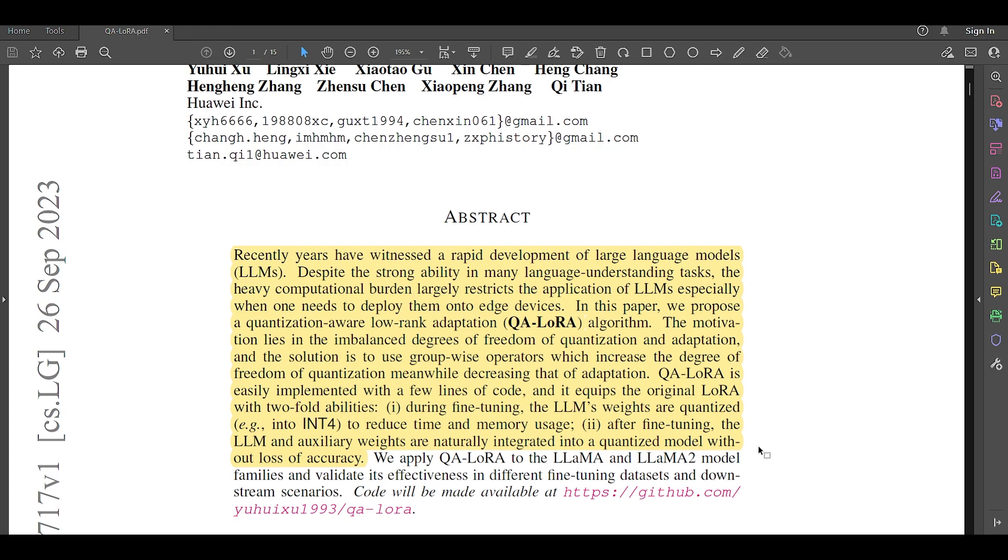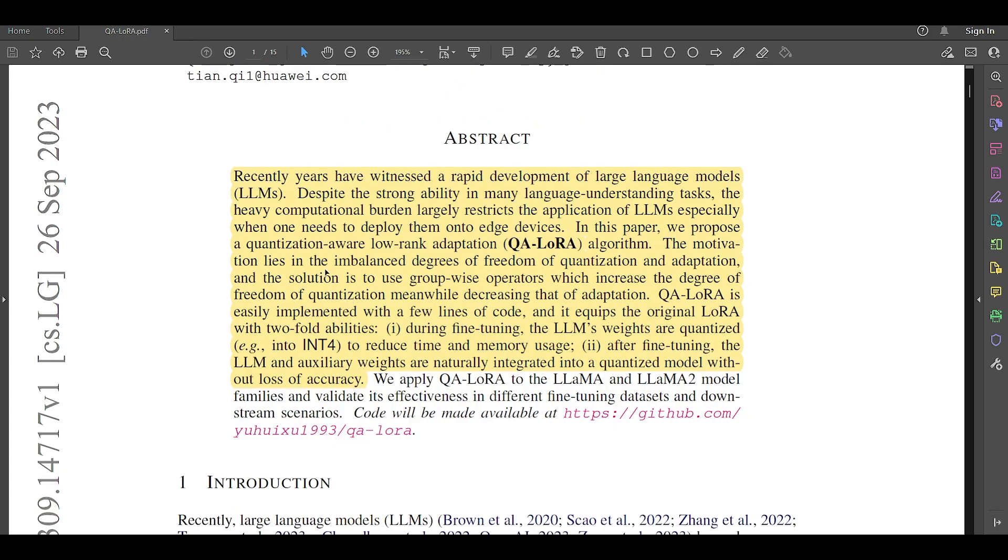Meanwhile decreasing that of adaptation. QA-LoRA is easily implemented with a few lines of code, and it equips the original LoRA with two-fold abilities. During fine-tuning, the LLM's weights are quantized into int4 to reduce time and memory usage. And after fine-tuning, the LLM and auxiliary weights are naturally integrated into a quantized model without loss of accuracy.